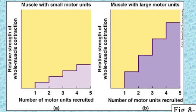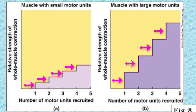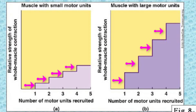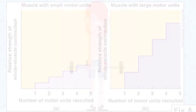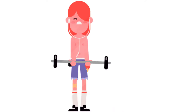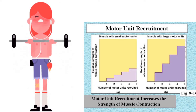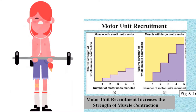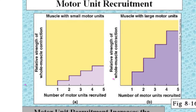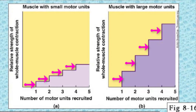As more strength is needed, larger motor units with bigger, higher threshold motor neurons are enlisted to activate larger muscle fibers. This increasing activation of motor units produces an increase in muscle tension known as recruitment. As more motor neuron units are recruited, the muscle contraction grows progressively stronger.